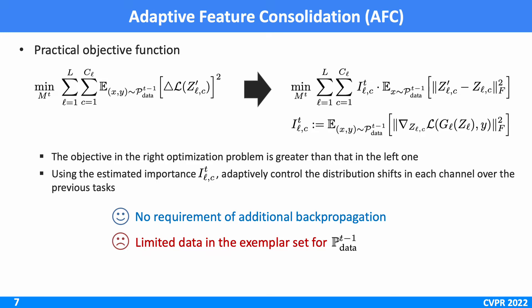The interpretation of the right optimization problem is that using the estimated importance ILCT, we can adaptively control the distribution shifts in each channel over the previous tasks.